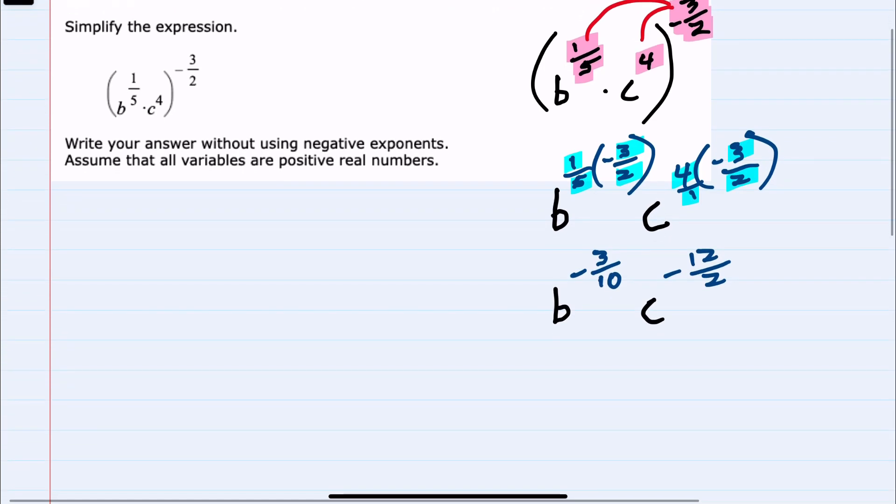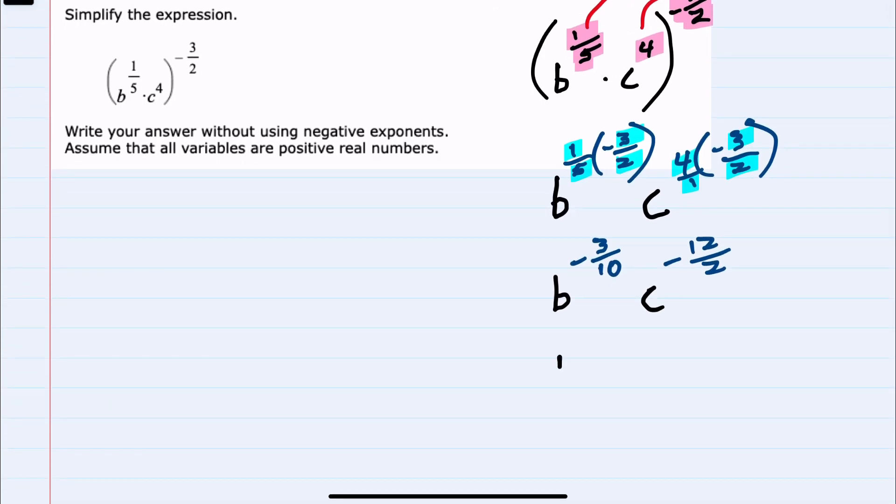Checking to see if either of these simplify, the second one will simplify. C to the negative 12 over two. Negative 12 over two is just negative six.